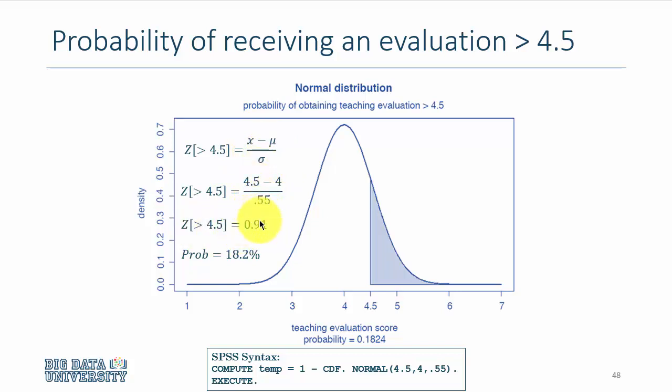If you take a standard normal table or compute the statistics in SPSS, you get an 18.2% probability. Essentially, the probability of getting a teaching evaluation score greater than 4.5 is 18.2%.